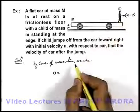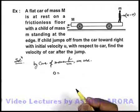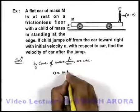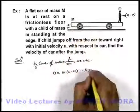And whenever we conserve momentum, it must be conserved with respect to an inertial frame or with respect to ground. So toward right, the boy will be having a momentum small m into u minus v, minus the momentum of car, that is Mv.